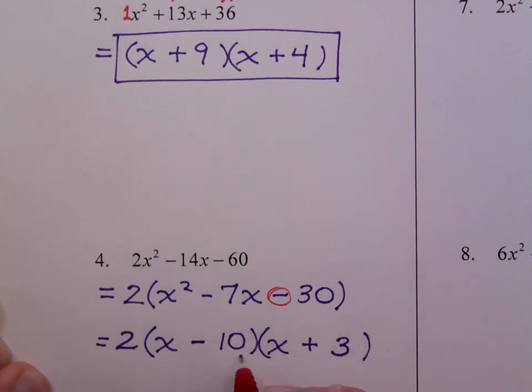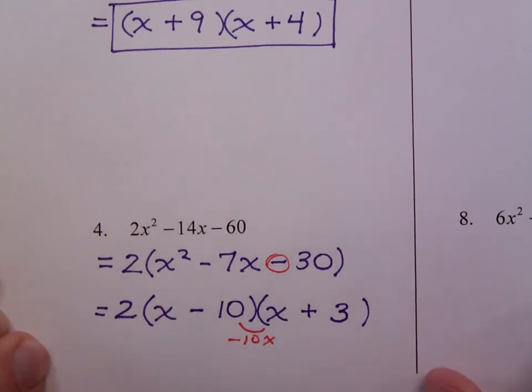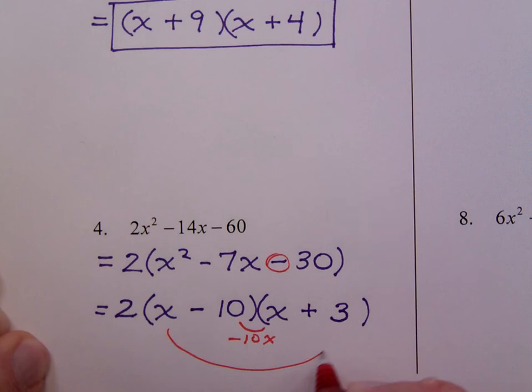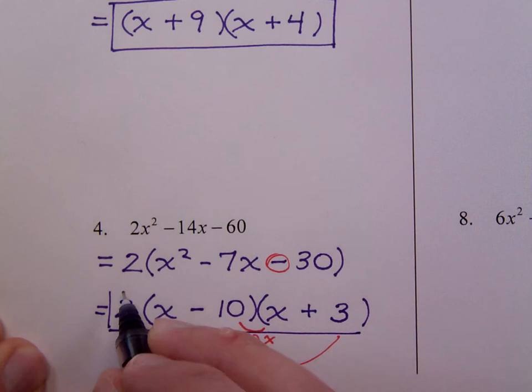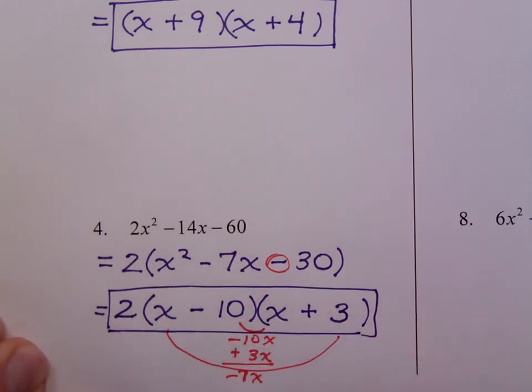Make sure you check this. Negative 10 times negative 3 is a negative 30. When I do the inside and outside pieces here, this is a negative 10x. And this gives me a positive 3x. So you see that we do end up with the correct middle term of negative 7x. And if you multiply this times 2, you'll get the negative 14x that was in your original problem. So it's always a good idea to check your work on these problems.